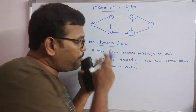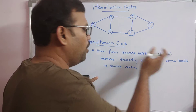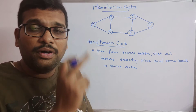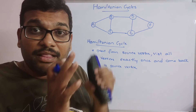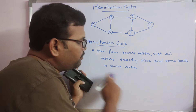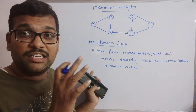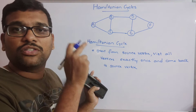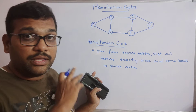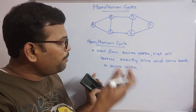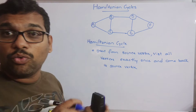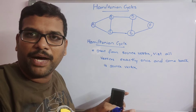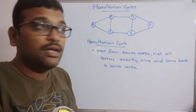This same concept — starting from a source vertex, visiting all vertices exactly once, and coming back to the source vertex — is also the basis of the Traveling Salesperson Problem. But there, we solve it with minimum cost. The traveling salesperson starts from the source, visits all other vertices, and returns with minimum cost. There we select only the optimal solution, but here we are finding all possible paths.